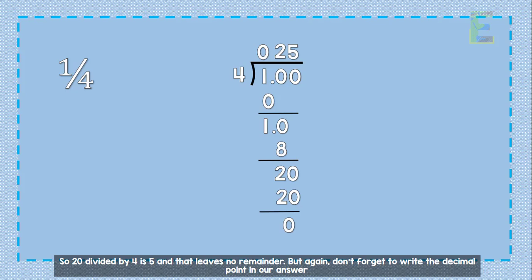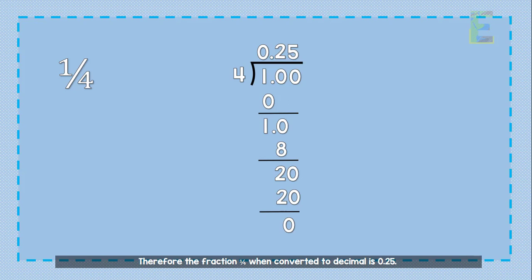But again, don't forget to write the decimal point in our answer. Therefore, the fraction one over four when converted to decimal is 0.25.